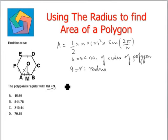So, all we need to do is plug in the values in the formula: 1 half times n is 6, r squared is 9 squared, times sine of 2 pi by 6.